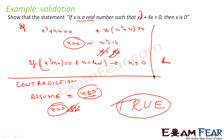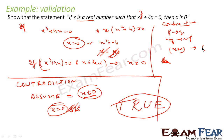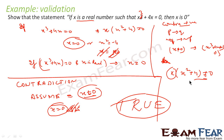We can also prove this using contrapositive. The contrapositive of p implies q is: not-q implies not-p. Here, not-q is x ≠ 0, and not-p is x³ + 4x ≠ 0. So the contrapositive statement is: if x ≠ 0 (and x is real), then x(x² + 4) ≠ 0. The values that make this zero are x = 0 or x = ±2i, none of which are non-zero real numbers.